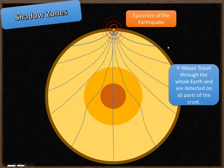It's going to be detected quite strongly closer to the epicentre, but it will still be detected on other parts of the Earth as well. This is because P waves can travel through solids and liquids, so they travel through all parts of the Earth.